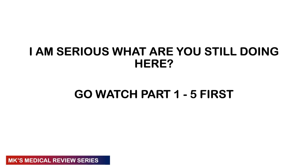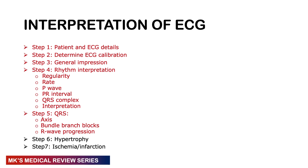In the previous videos we looked at the seven-step interpretation of the ECG — the patient and ECG details, calibration, general impression, rhythm interpretation, the QRS complex assessment. We looked at cardiac axis, left bundle branch block, and right bundle branch block. In this particular video we're going to look at R wave progression. In the last two sections we will look at hypertrophy, ischemia, and infarction, which will be separate videos released on separate days so you can absorb the content step by step.